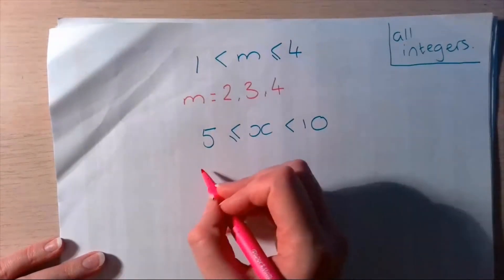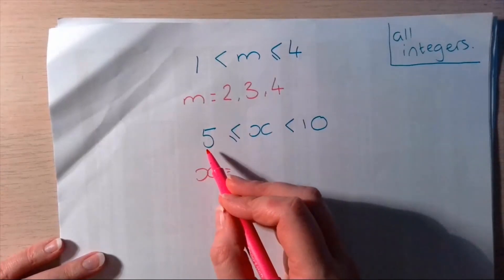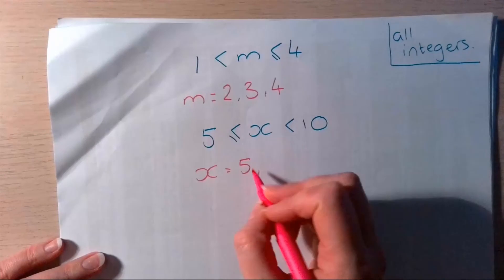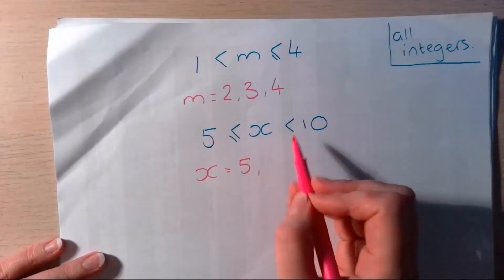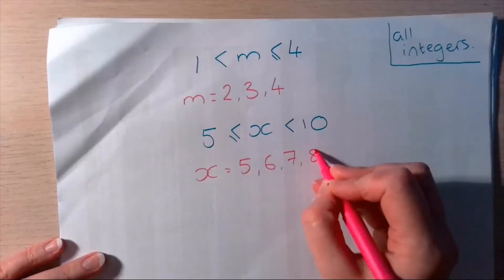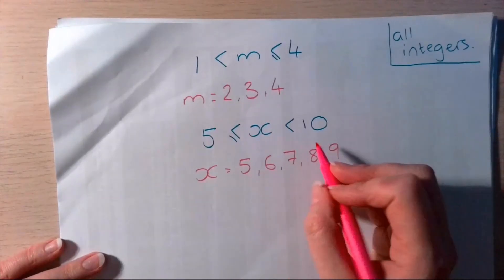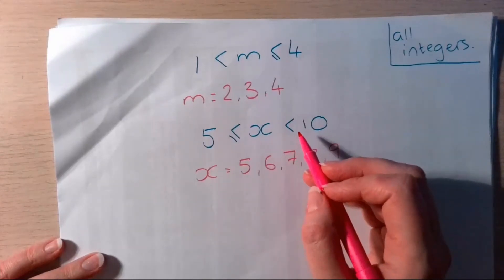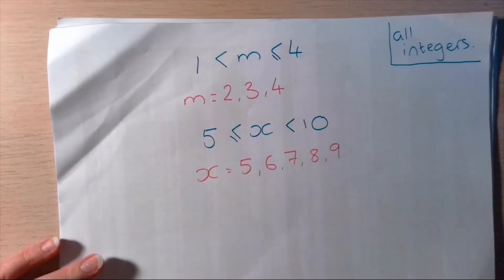So, 5 is less than or equal to x, which is less than 10. So, x could be 5, because it's greater than or equal to 5. And it could be all the other numbers in between 5 and 10. So, it could be 5, it could be 6, it could be 7, it could be 8, it could be 9. But it can't be 10. It's got to be less than 10. It can't equal 10. So, there are my numbers that it could possibly be.